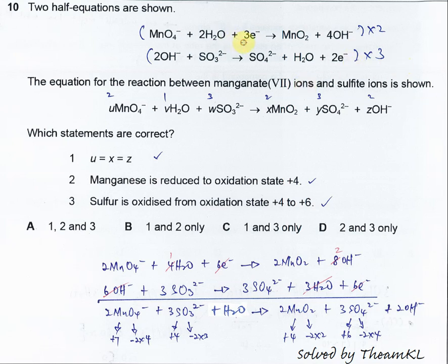We make sure the electron numbers are the same. So the first half equation needs to times 2, the second half equation needs to times 3, so they have 6 electrons each.